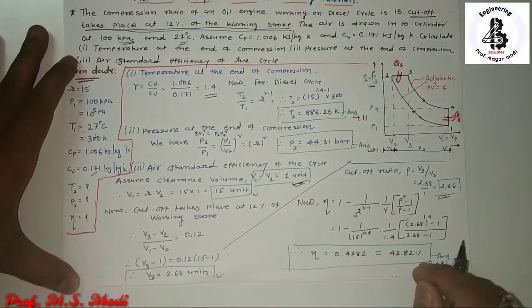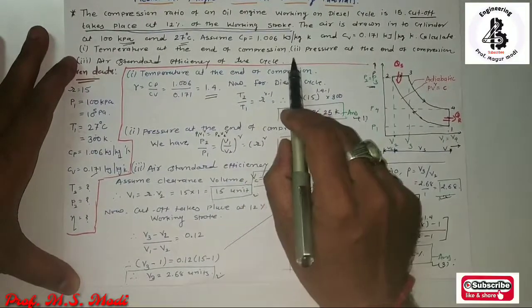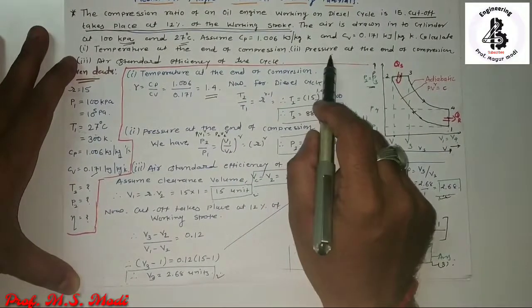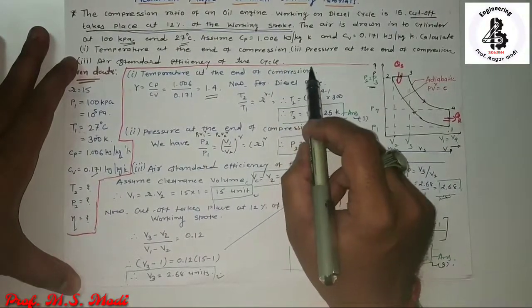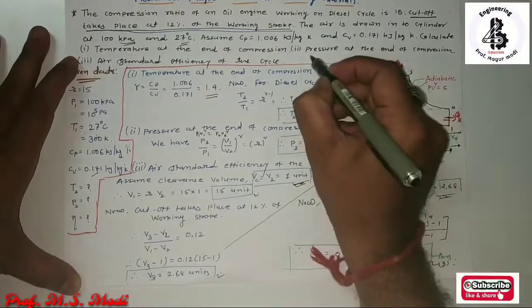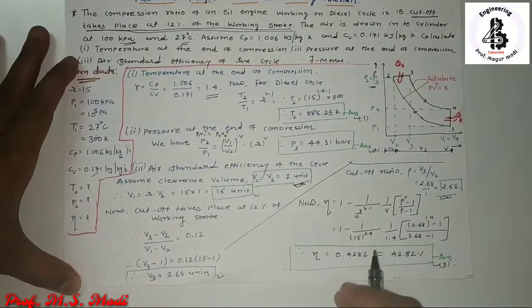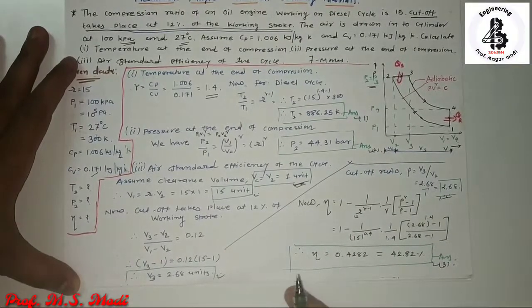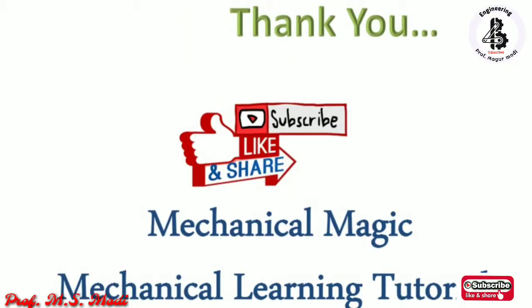This is the simplest method for calculating temperature at the end of compression, pressure at the end of compression, and the air standard efficiency of the cycle. Such questions are typically asked as 7-mark questions from different universities. If you like it and understand, then please subscribe and share. Thank you very much.